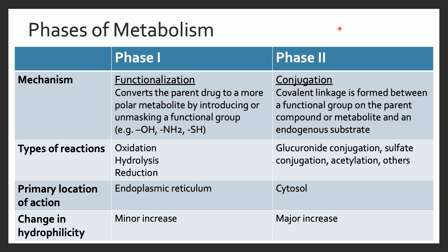Subsequently, we see phase two metabolism, known as conjugation. This is when a covalent link is formed between the functional group from phase one and an endogenous substrate, primarily through glucuronide conjugation. Metabolites formed in these synthetic reactions are more polar, allowing for better elimination — in other words, there is a major increase in the hydrophilicity of these drugs through phase two metabolism.